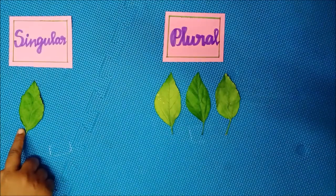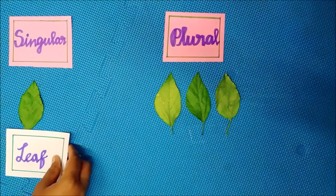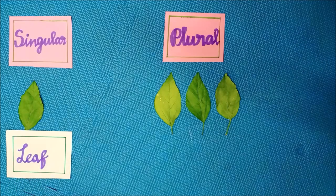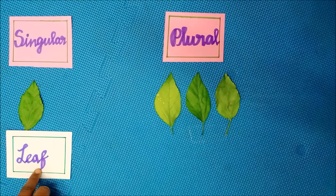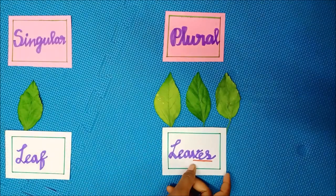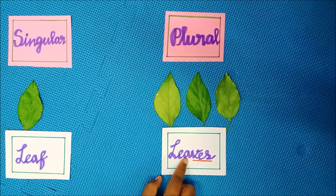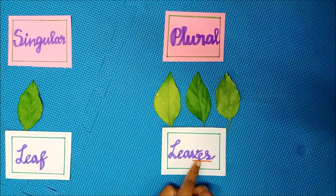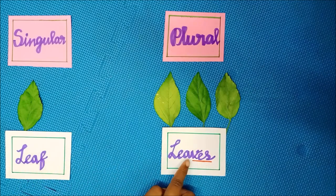It is a leaf — see the spelling: L-E-A-F. Leaf ends with the letter F. If the singular noun ends with F or FE, remove F and add VES. So the plural form of leaf is leaves, L-E-A-V-E-S.